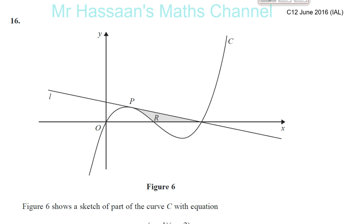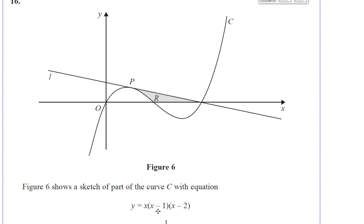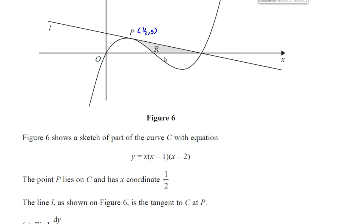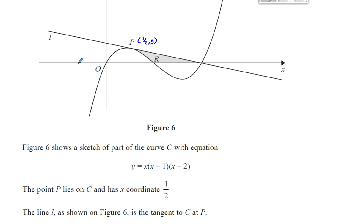Figure 6 shows a sketch of part of the curve C with equation y equals x times, in brackets, x minus 1, in brackets, x minus 2. The point P lies on C and has x-coordinate a half. The line L, as shown on the graph, is a tangent to the curve at point P. It has the same gradient as the curve at that point.